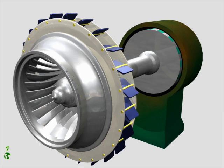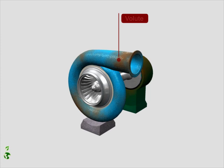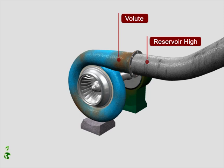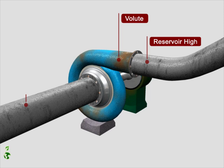A volute casing surrounds the guide wheel. Water enters the turbine from a pipe connected to the higher reservoir of the pumped storage plant. The water is then conveyed through another pipe to the lower reservoir.